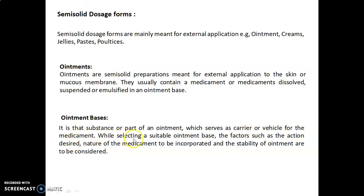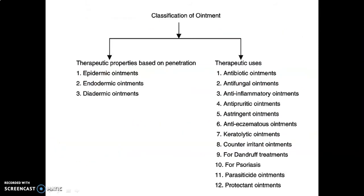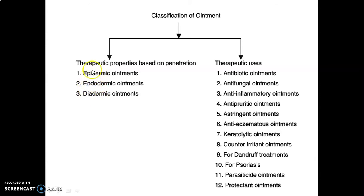While selecting a suitable ointment base, factors such as the action desired, nature of the medicament to be incorporated, and the stability of the ointment are to be considered. The classification of ointments has two main classes: first, based on therapeutic properties and penetration; second, based on therapeutic uses. The first class is further classified into three types: epidermic, endodermic, and diadermic ointments, according to the layer of skin.